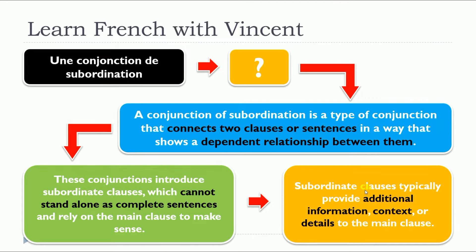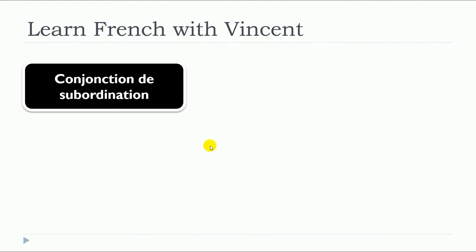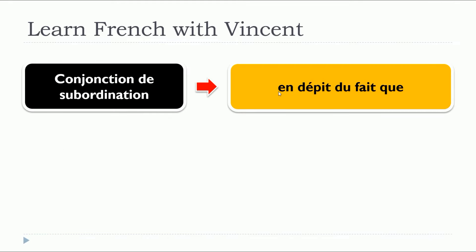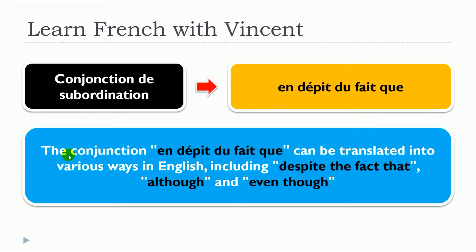The subordinate clauses typically provide additional information, context, or details to the main clause. This lesson is about en dépit du fait que. The conjunction en dépit du fait que can be translated in various ways in English, including despite the fact that, although, and even though.